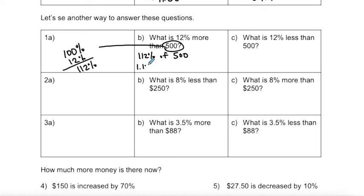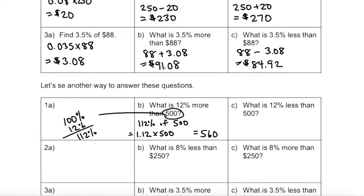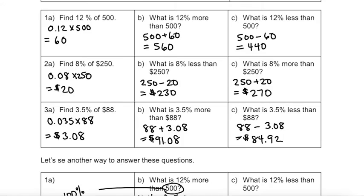I'm going to take my percentage, change it into a decimal number by dividing by 100, and multiply that by my 500. And that gives me 560, which is exactly what I had up there, but in a different format. I solved it using a different method.